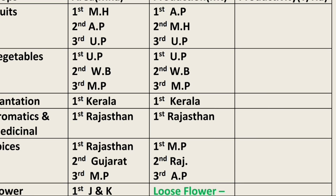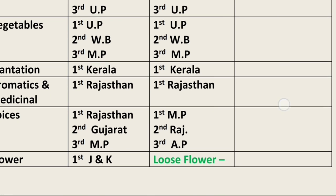In terms of plantation crops, Kerala has the maximum area as well as maximum production. In terms of aromatic and medicinal crops, Rajasthan has the maximum area and also the maximum production.